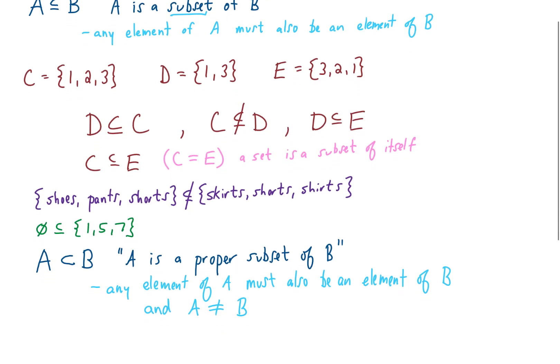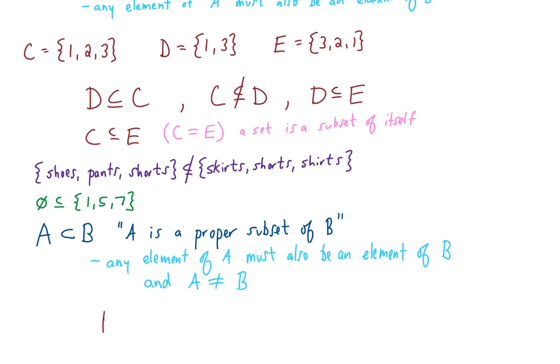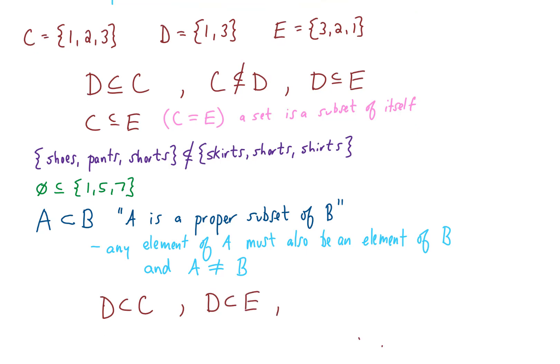So if we still use those same sets from above, the set D is a proper subset of C. It is still the case that every element in D is included in C, and it is true that the set D is not equal to the set C. D is also still a proper subset of E for the same reasons. However, if we look at the sets C and E, C is not a proper subset of E because C and E are equal to each other. They're the same thing. So what that means is a set is not a proper subset of itself.